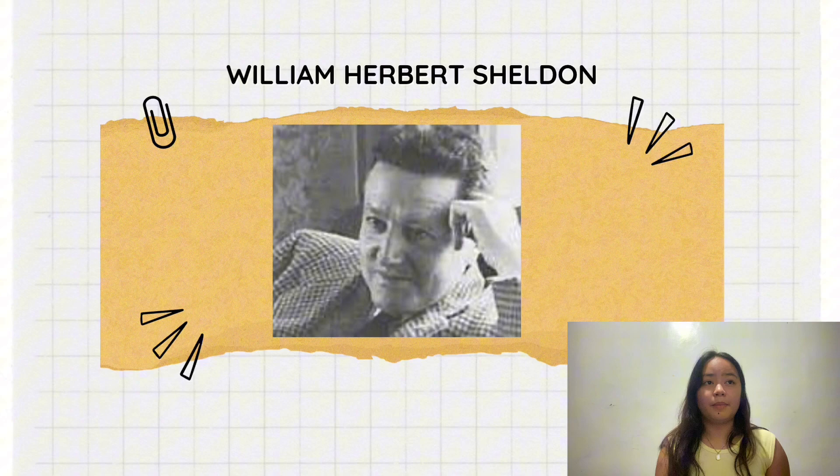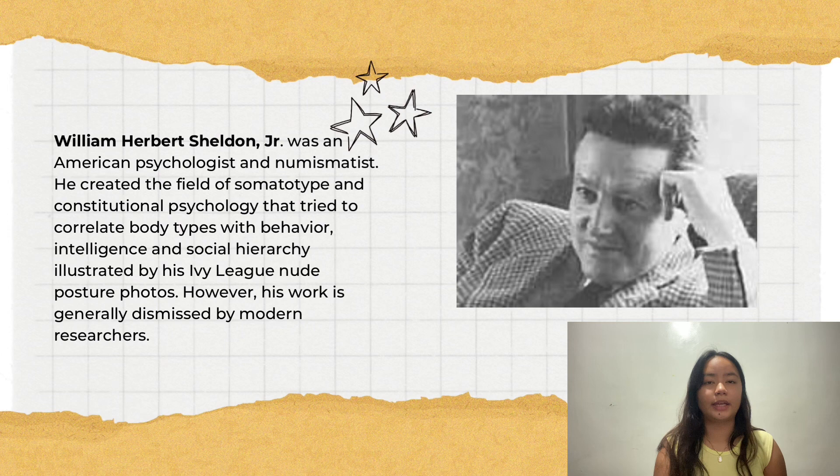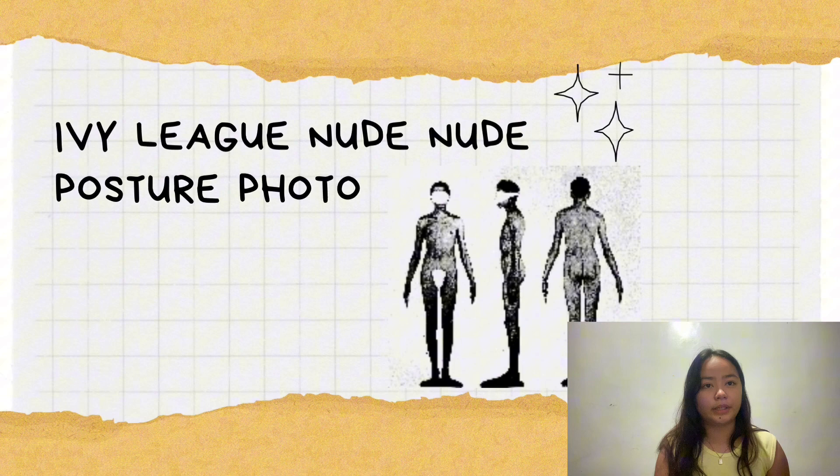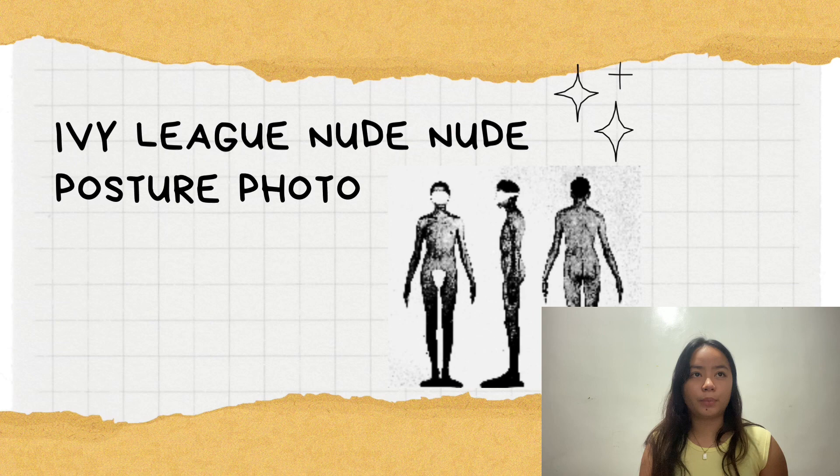William Herbert Sheldon Jr. was an American psychologist and anatomist. He created the field of somatotype and constitutional psychology, which tries to correlate body types with behavior, intelligence, and social hierarchy, illustrated by his nude posture photos. However, his work is generally dismissed by modern research.